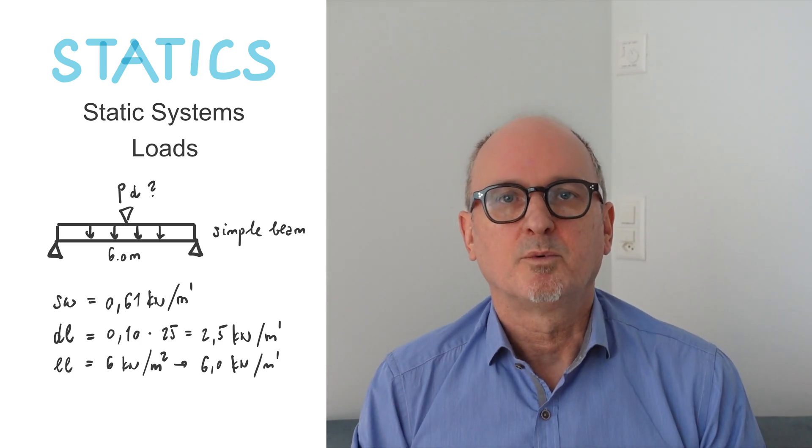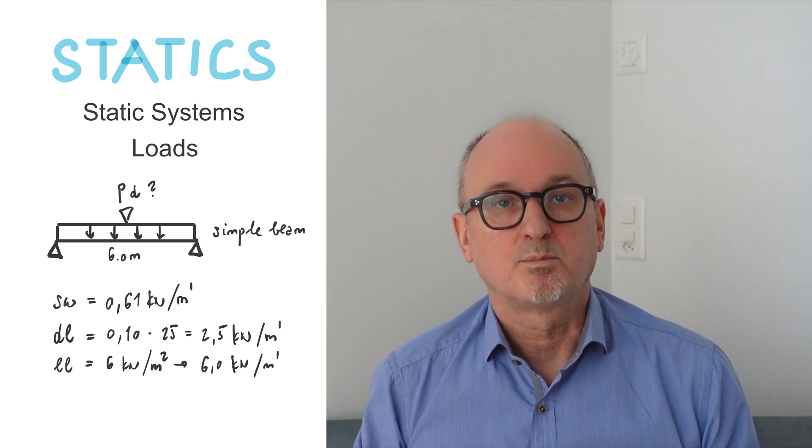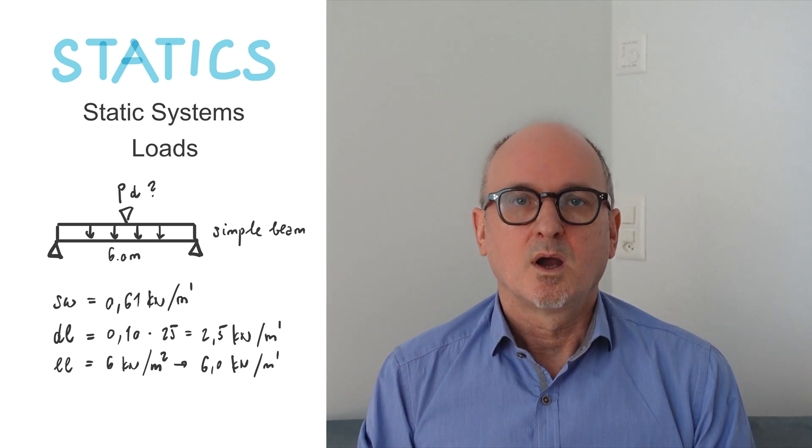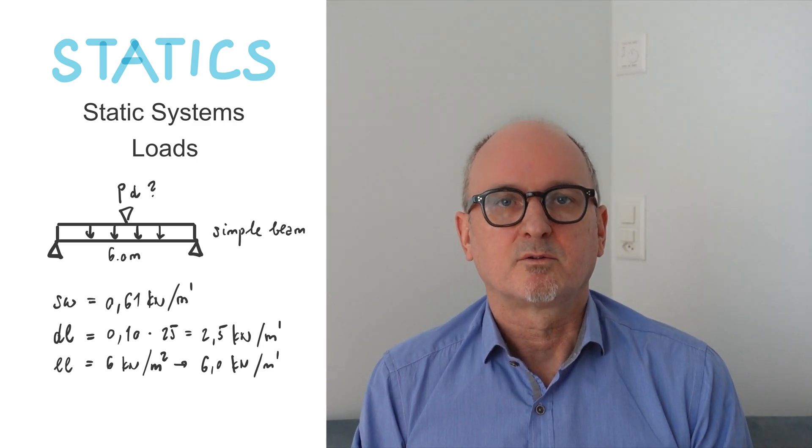So we choose a girder HEB200, which is a DIN dimension with a steel quality of S 235. The self weight of this girder is 61 kilogram per meter. Then there is a bridge surface construction. Let's suppose a 10 centimeter concrete element which is the dead load. And there is a life load of 6 kN per square meter. These values are effective.